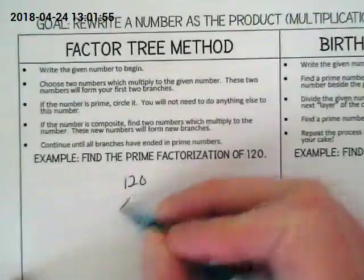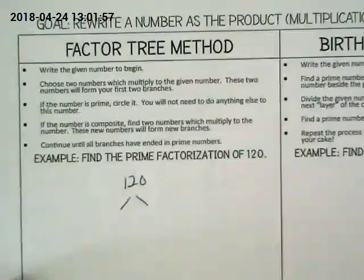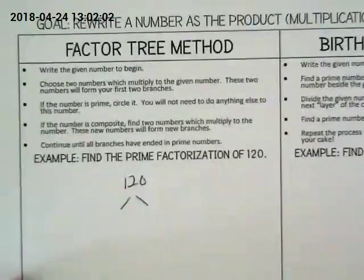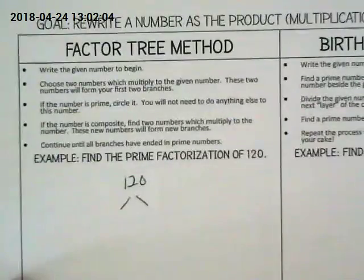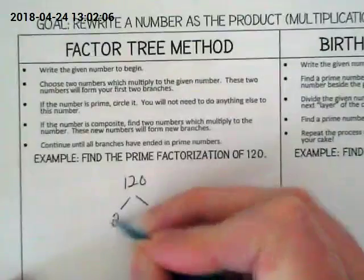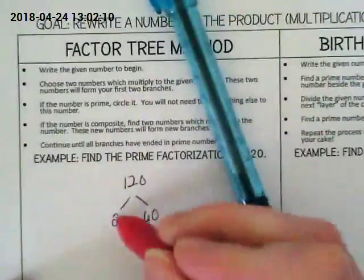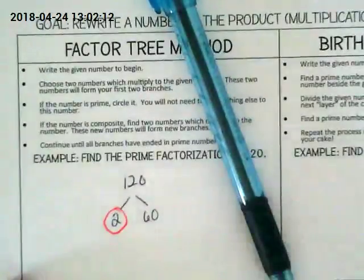With a factor tree, we put branches down and we divide by two factors that we know work for 120. Two and what? 60. Okay. Is two a prime number? No. So we circle it because that means that branch is done.